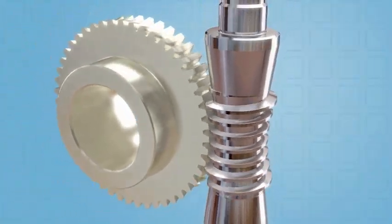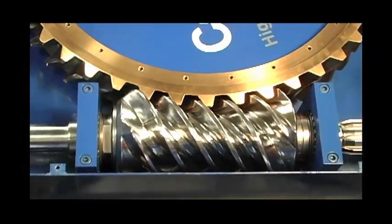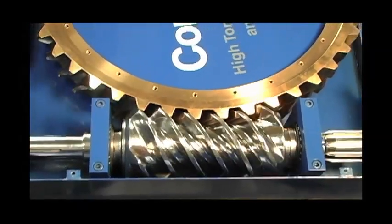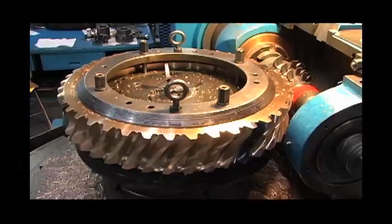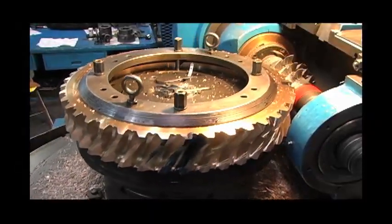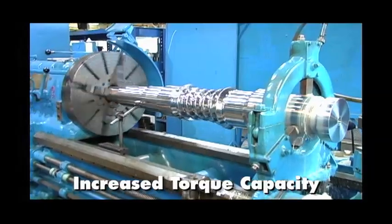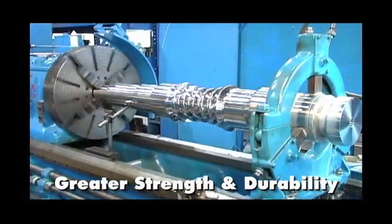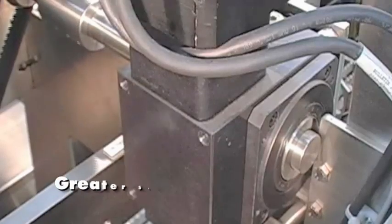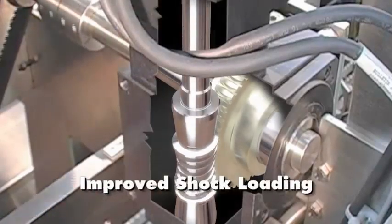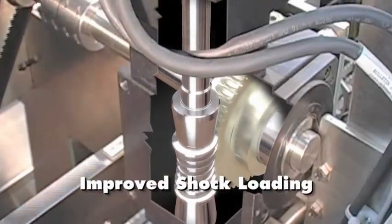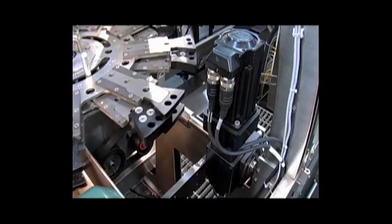The magic of double enveloping is how the worm and gear wrap around each other, providing up to eight times more gear teeth in contact, producing increased torque capacity. This additional contact surface provides greater strength and durability, with higher ratings, improved shock loading, precision, and efficiency compared to standard cylindrical worm gearing.